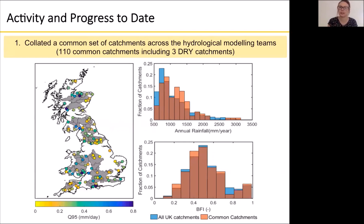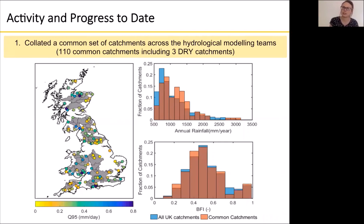The two histograms on the right show that we're covering a wide diversity of hydrologic and climatic variability across Great Britain. In orange are the histograms from our common catchments in terms of annual rainfall and the base flow index — the proportion of flow coming from groundwater sources. You can see that we're covering quite a wide diversity, so these catchments are essentially a good representation of catchments across Great Britain.